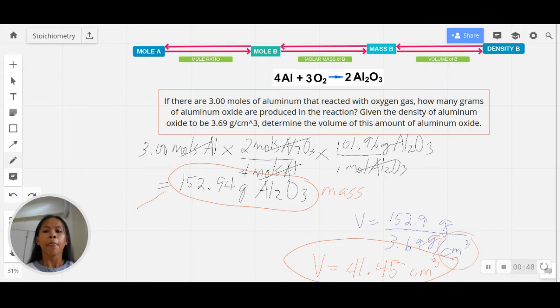You're asked for the grams of aluminum oxide, so this is a mole-to-mass problem. Then, right after getting the mass, because you're given the density of aluminum oxide to be 3.69 grams per cubic centimeter, you can then determine the volume of this amount of aluminum oxide.